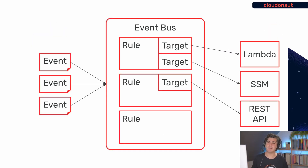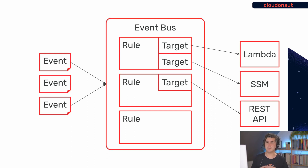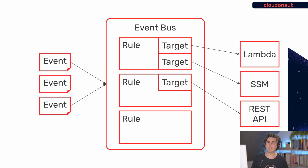Before we start, a quick recap: what is EventBridge? EventBridge is a service where you can send events into the so-called event bus. If you don't create an event bus, there is a default event bus in each AWS account. Within an event bus you can have rules, and a rule matches on the content of the event — always a JSON document. If a rule matches, targets can be executed, and you can have up to five targets for a rule.